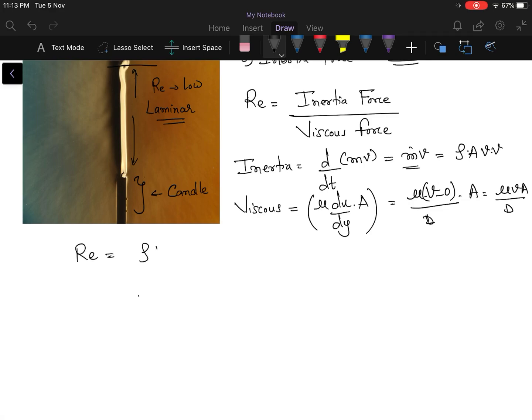And if you take the ratio of inertia force by viscous force, you will get Reynolds number as rho v d by mu. So this is my Reynolds number and here we have rho as density, v as velocity. And remember that it is a mean or average velocity. d is, in this case we have assumed it as a diameter, but basically it is a characteristic length